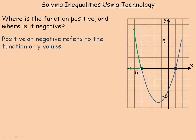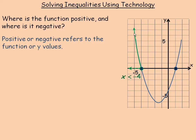The interval for x where y is positive is to the left of that negative four point. So we would say the interval where x is less than negative four — anywhere along there, the y coordinates are positive.